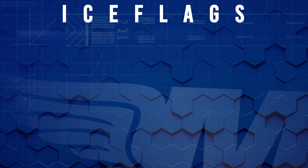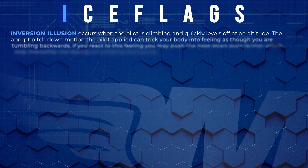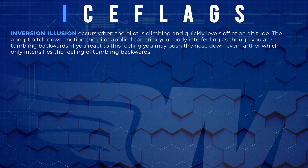I is for inversion illusion. For example, a quick change from a climb to level flight will make the pilot feel as if they are tumbling backwards. The natural tendency is to nose the aircraft over and this will intensify the illusion.